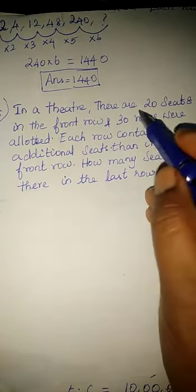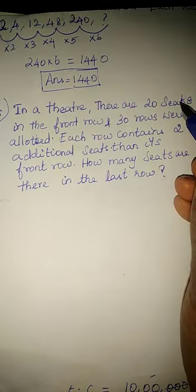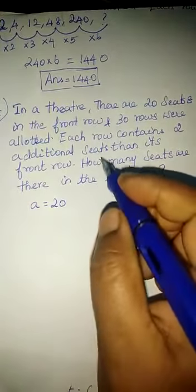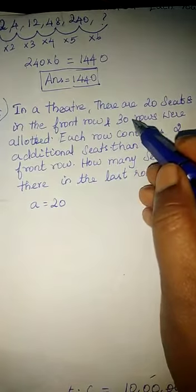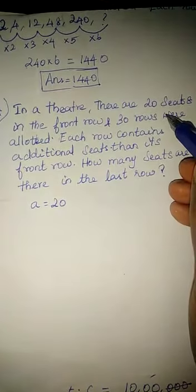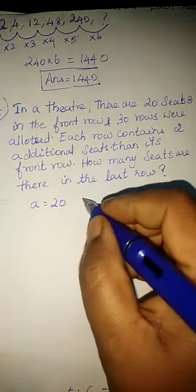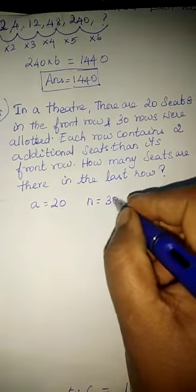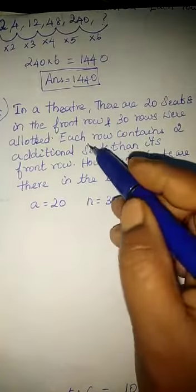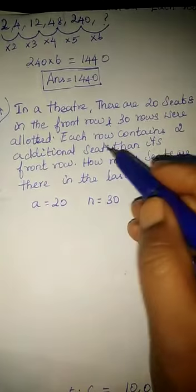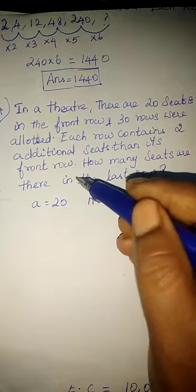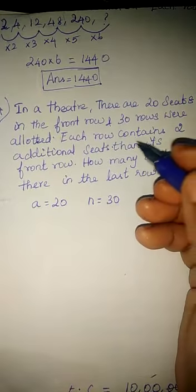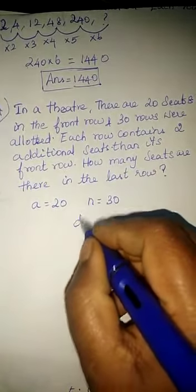Here in the front row there are 20 seats so we are taking a as 20, and totally there are 30 rows so the last row is 30, and each row contains two additional seats means the difference is 2.